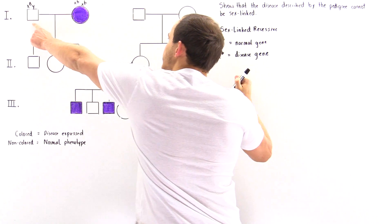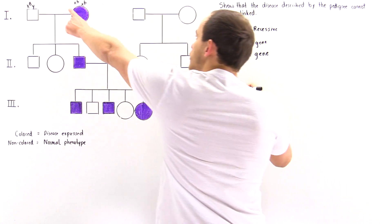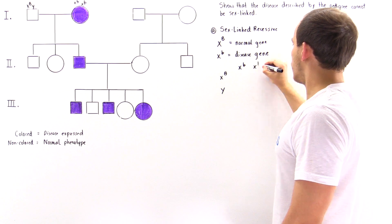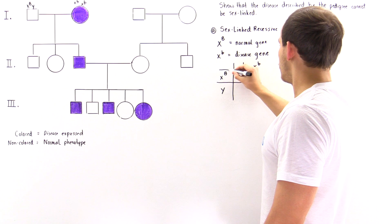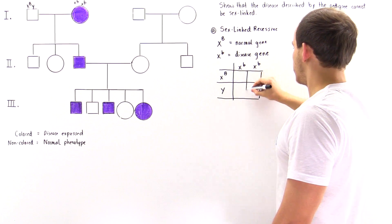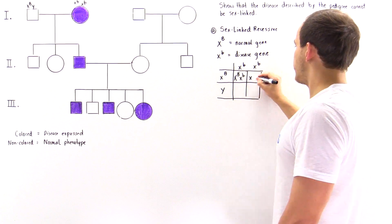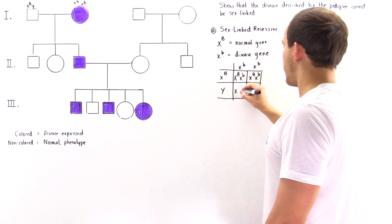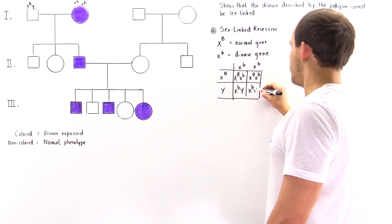The male parent produces either an X uppercase B sperm cell or a Y sperm cell. The female parent produces only one type of egg cell: X lowercase b. Carrying out this Punnett square, we get X uppercase B, X lowercase b; X uppercase B, X lowercase b; X uppercase B, Y; and X uppercase B, Y.